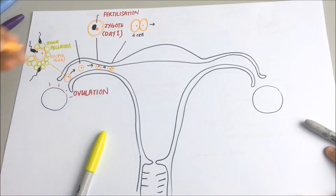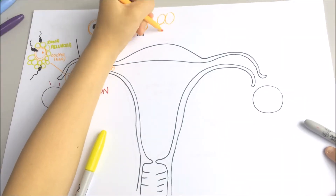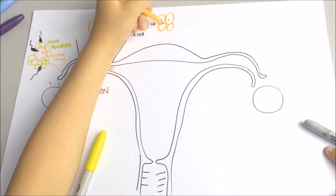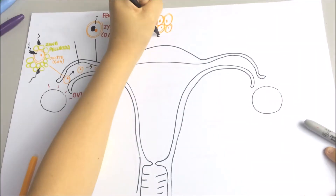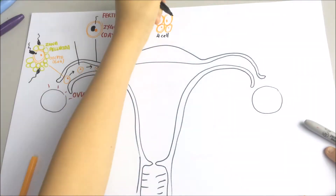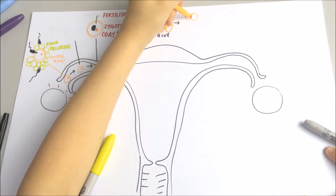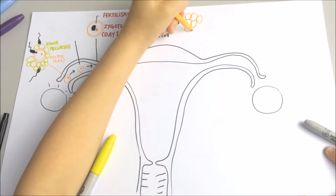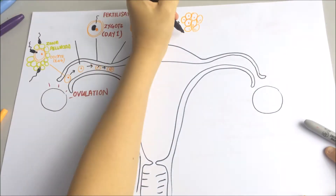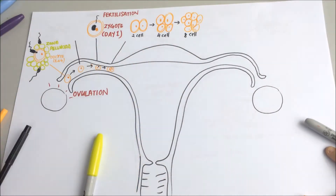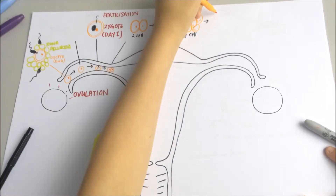The action of the cilia along the fallopian tube also aids movement. During its journey to the uterus, the zygote will undergo many divisions. The first division forms a two-cell embryo, then into a four-cell embryo, eight-cell embryo, and eventually into a solid ball of cells known as a morula.